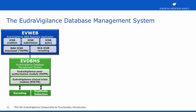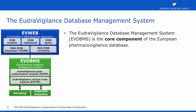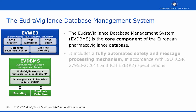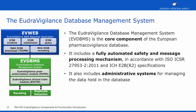The EudraVigilance database management system is the core component of the European Pharmacovigilance database. It includes a fully automated safety and message processing mechanism in accordance with ICH E2B R3 standard (ISO/ICH standard 27953), and is also able to process the previous ICH E2B R2 message specification. This component includes administrative functionalities for managing data held within the database, and also provides access to data for EudraVigilance stakeholders in accordance with the EudraVigilance access policy.